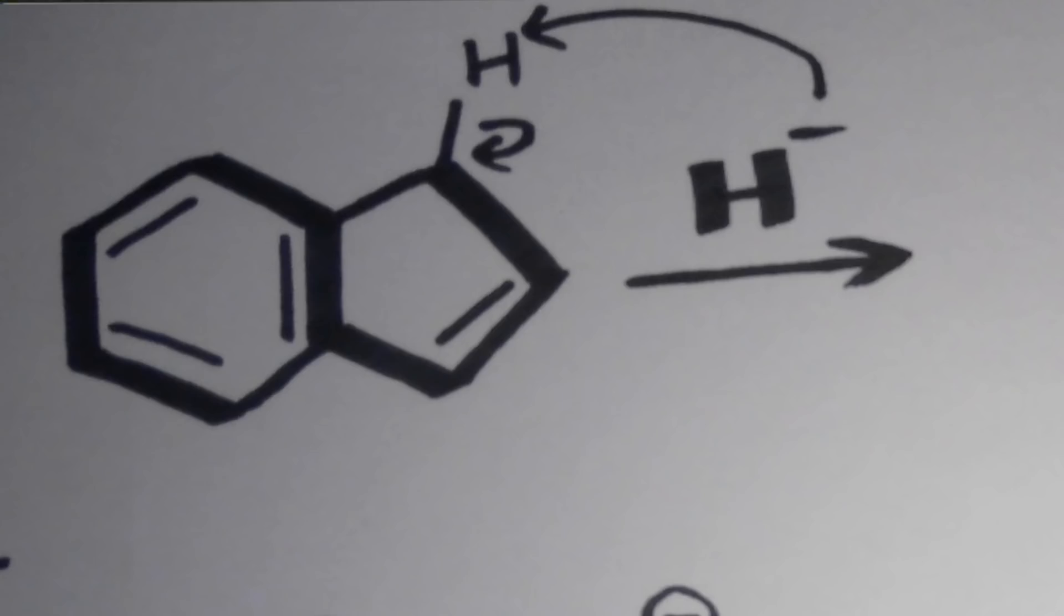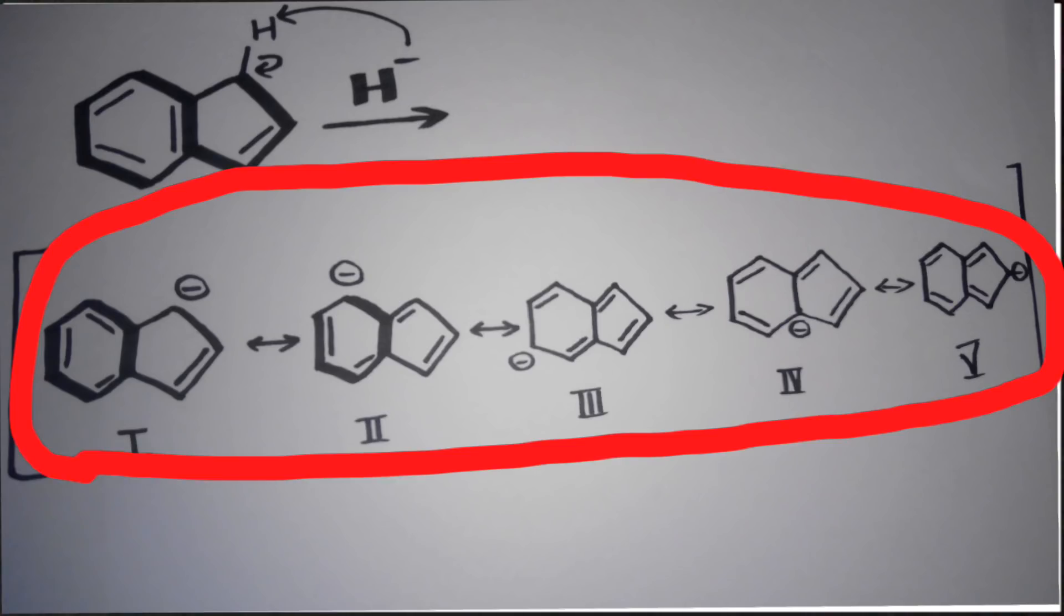Benzocyclopentadiene is acidic and can lose this proton readily to form benzocyclopentadienyl anion. The resulting structure will be aromatic in nature with 10 pi electrons.